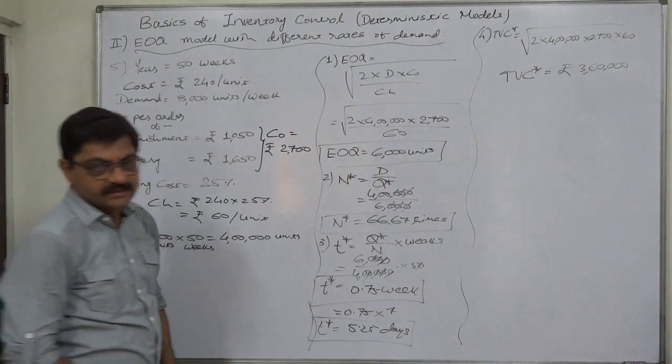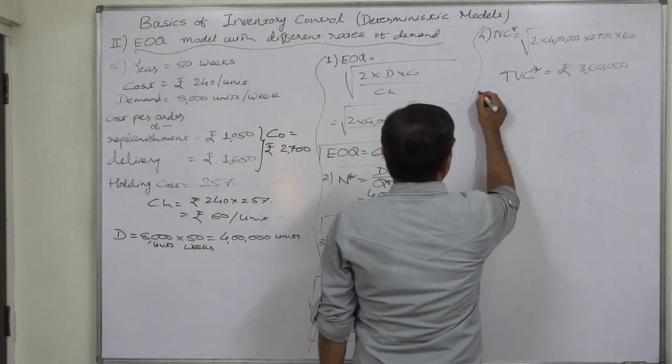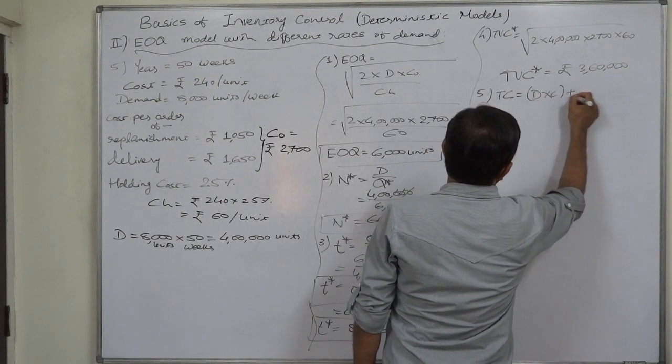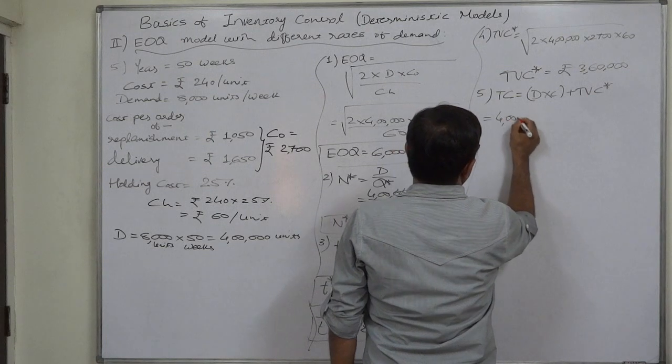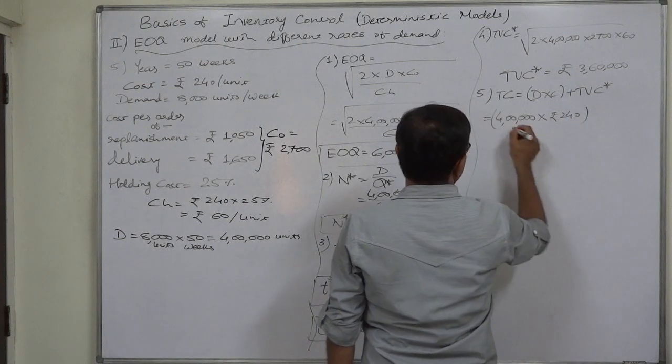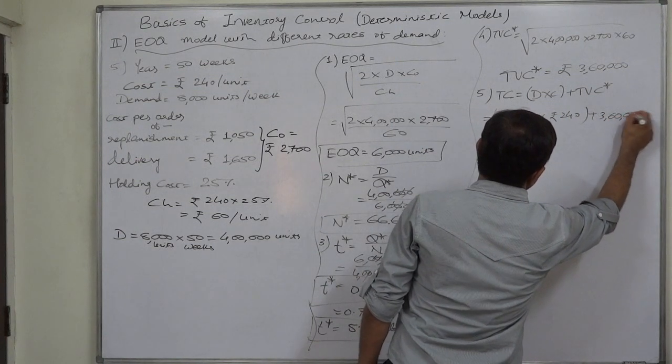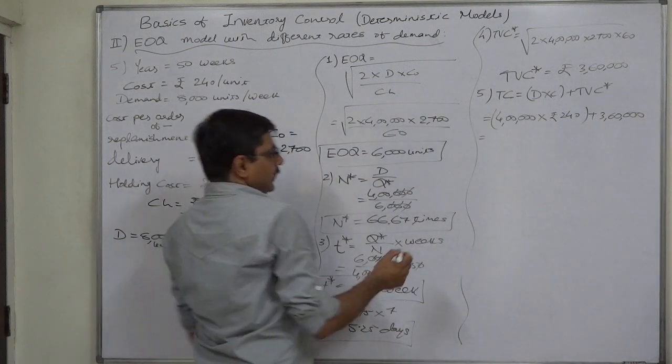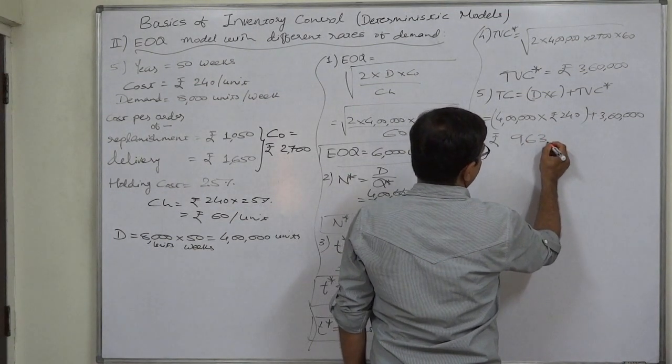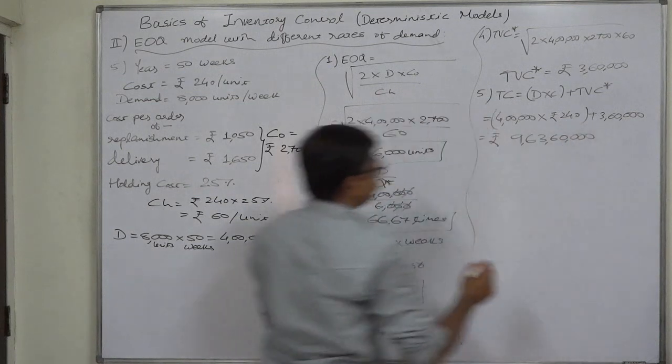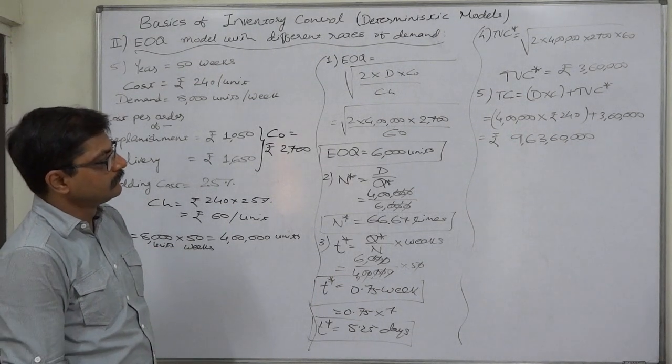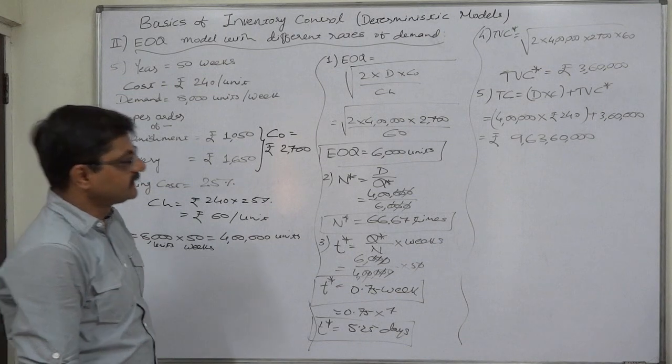And now let us calculate total inventory cost. That is D into C plus TVC. D is 4 lakh or 400,000 units, rupees 240 per unit cost, plus 3 lakh 60,000 or 360,000. It comes to rupees 9 crore 63 lakh 60,000 or 96 million 360,000.